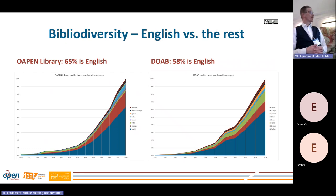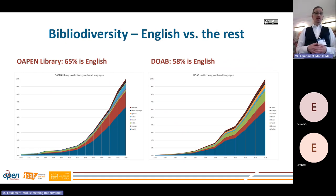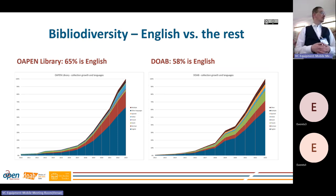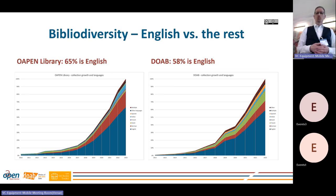And I have the graphs to prove it. On the left side, you'll see the Open Library, where we try to be quite diverse, but still 65% of the titles there are in English. And in DOAB, we're doing better because now we're down to 58% of books in English. And you'll see there's quite a lot of books in Spanish and Portuguese and French.